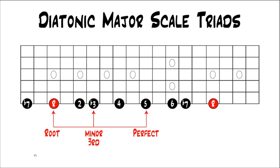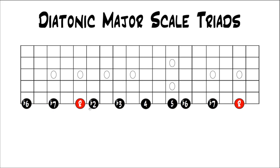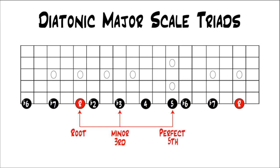Then we can do the same thing starting on every note. If we start on the third note of the major scale and make that our root, the intervals rearrange to root, flat 2, flat 3, 4, 5, flat 6, flat 7. We build a triad off of that note and we end up again with the root, minor third, perfect fifth — which is a minor triad. So building a triad off the first note of the major scale gave us a major triad, off the second gave us minor, and off the third gave us minor.